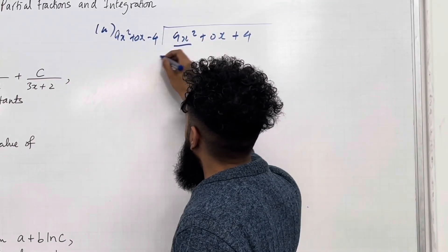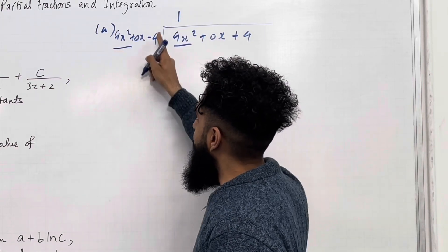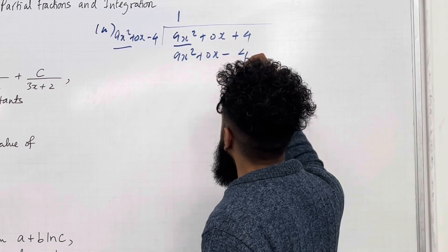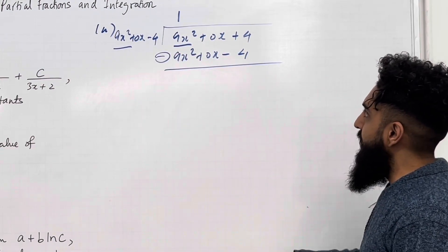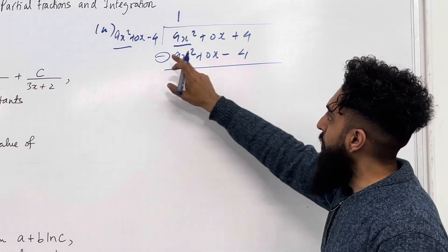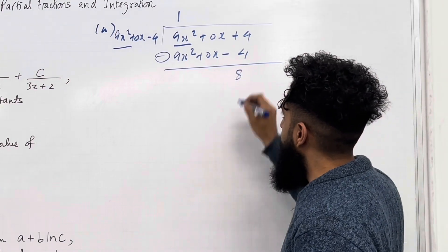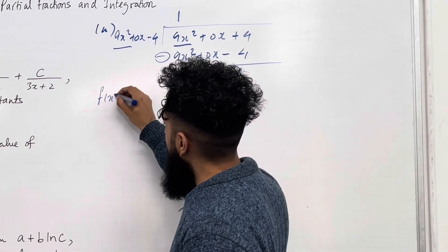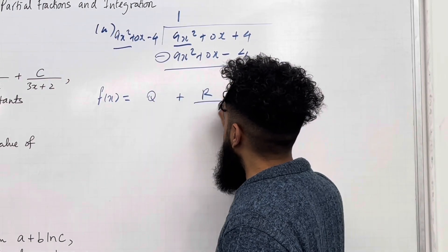9x squared divided by 9x squared is just 1. I take 1 and multiply by the divisor expression to get 9x squared plus 0x minus 4. Now I subtract the two polynomials: this becomes 0, this becomes 0, and over here I've got 4 minus minus 4, which is 4 plus 4, giving 8. So my f of x can be rewritten as quotient plus remainder over divisor.